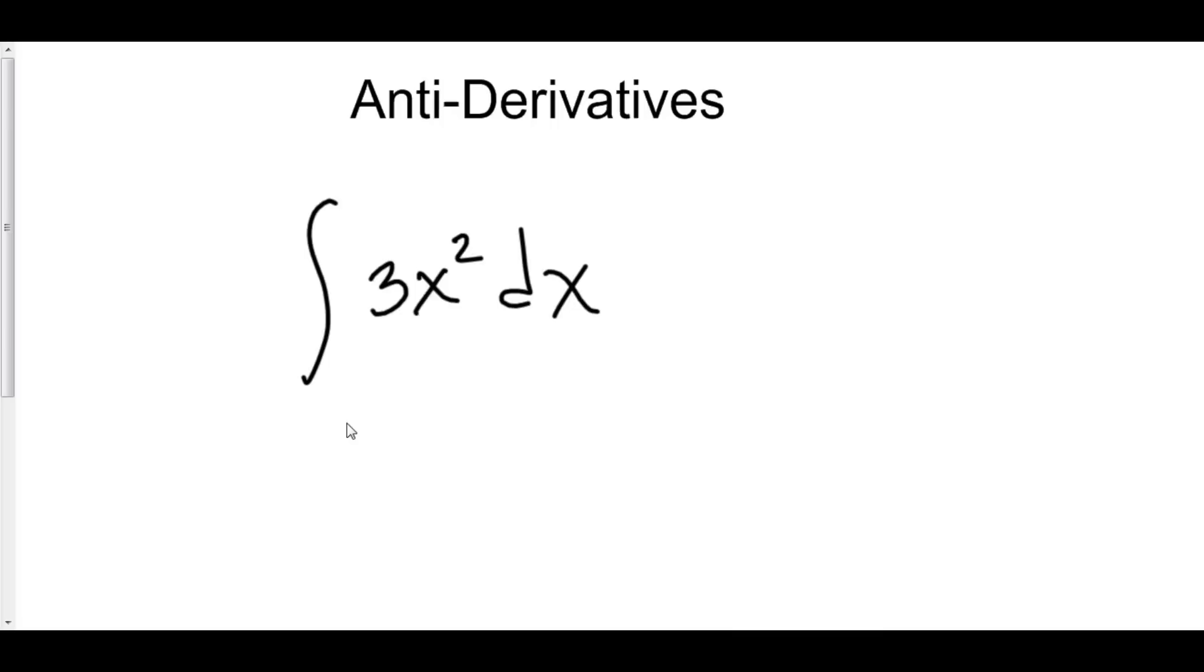We want to go up the ladder. So the antiderivative of 3x squared is what function, when you take the derivative of it, will give you 3x squared. Well, with a little bit of thinking, we know the derivative of what gives you x squared? Well, that means that our exponent has to be 1 higher. Let's try x cubed.